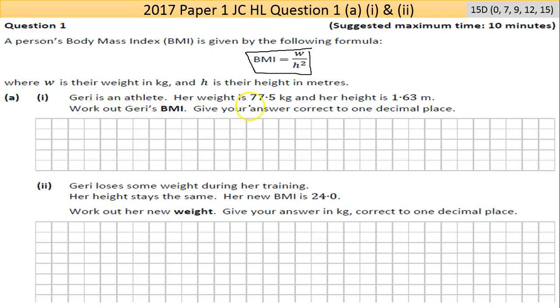Geri's an athlete. Her weight is 77.5 kilograms. Be careful now that it is given in kilograms. In my science or maths career, every unit was given to you in pounds, you had to convert it before you tackle the question, it was always very annoying. Her height is given in meters as well, 1.63 meters. Work out Geri's BMI, keep your answer correct to one decimal place.